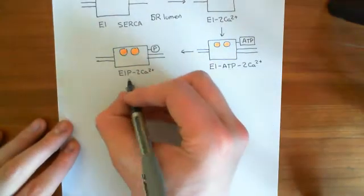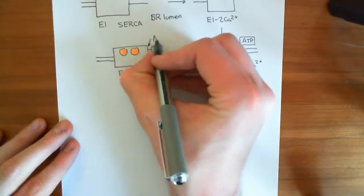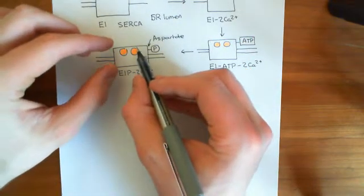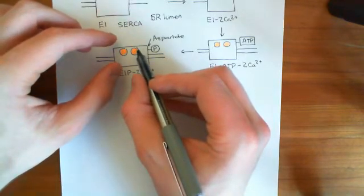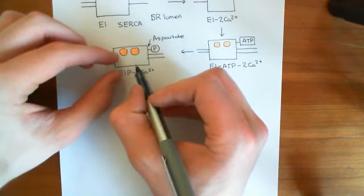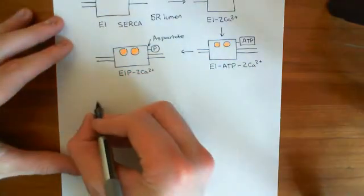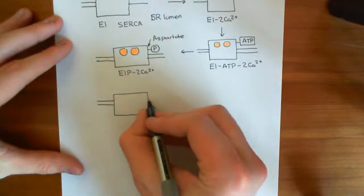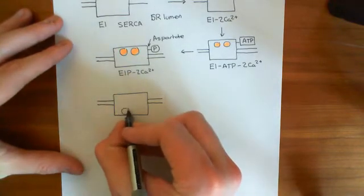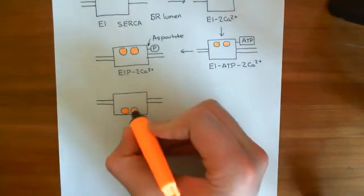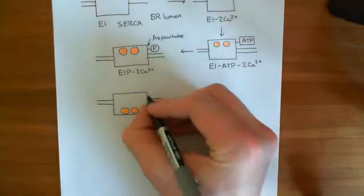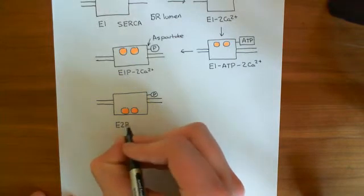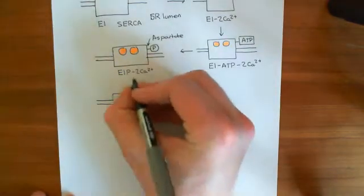The phosphate group being bound to the aspartate residue changes the conformation of the protein. The ligand binding sites — which have bound the calcium ions — move downwards and are now closer to the ER lumen than to the cytoplasm. When SERCA is in the conformation where the ligand binding sites are closer to the lumen of the endoplasmic reticulum, it is known as the E2 conformation. So the two calciums are now held closer to the ER lumen side. This is the E2-P-Ca²⁺ conformation.